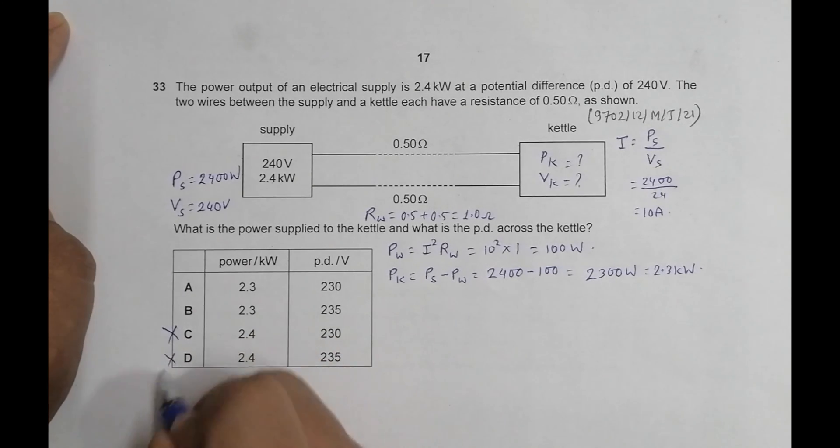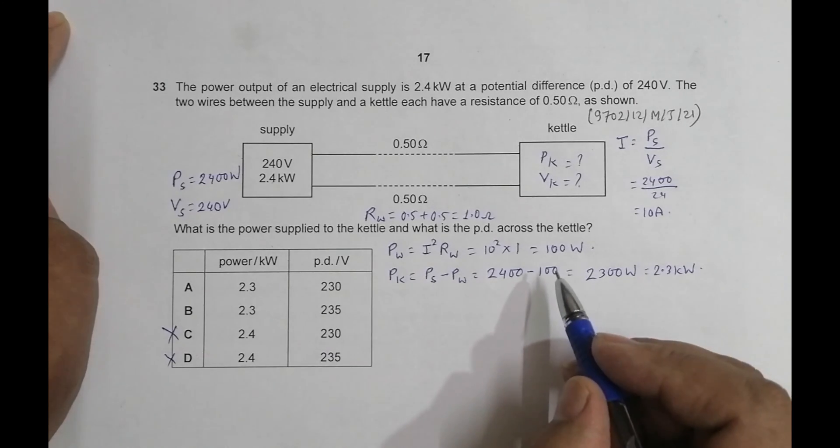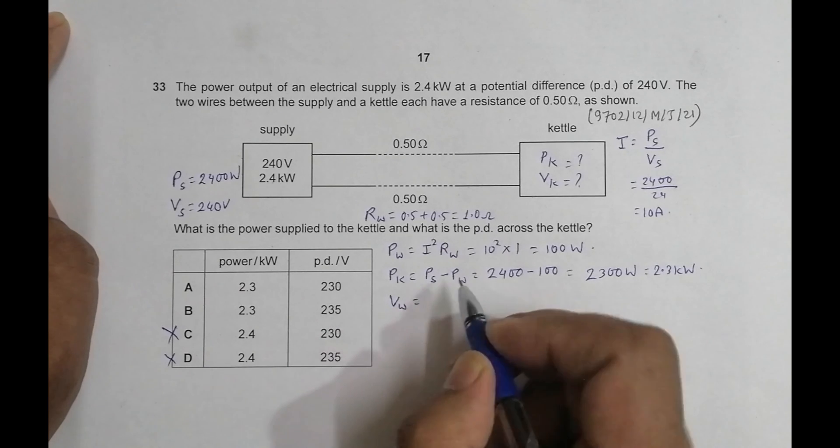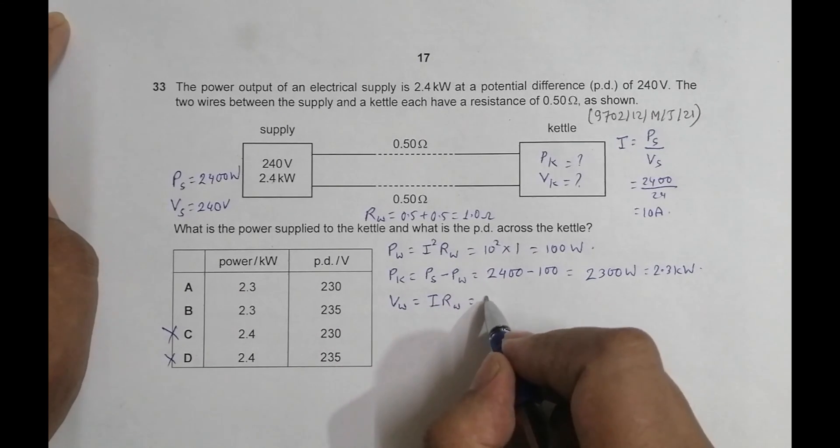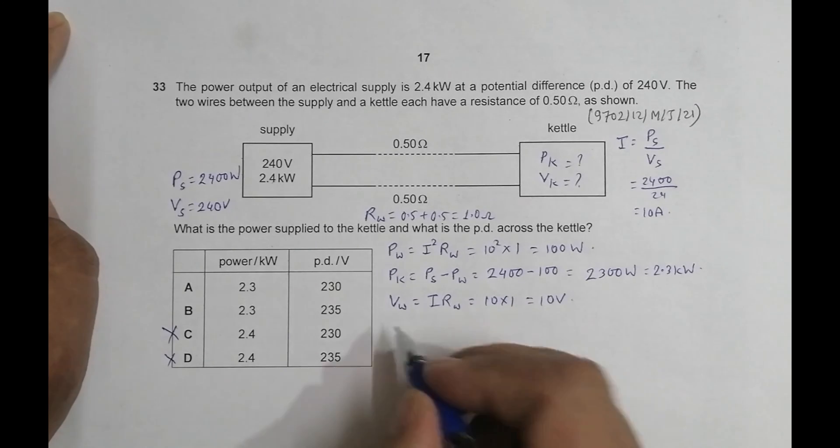Now regarding the PD, the PD across the wires will be equal to I into R of the wires. That's equal to 10 into 1, equal to 10 volts. So the PD across the kettle should now equal to the total PD across the source minus V across the wires.